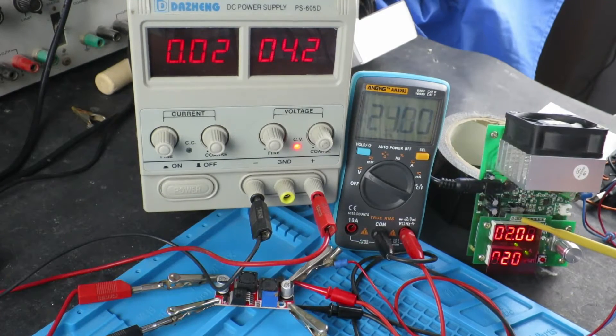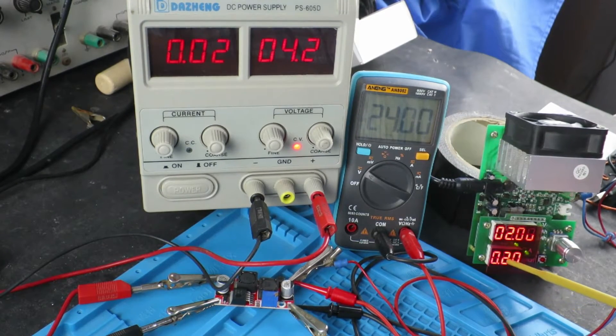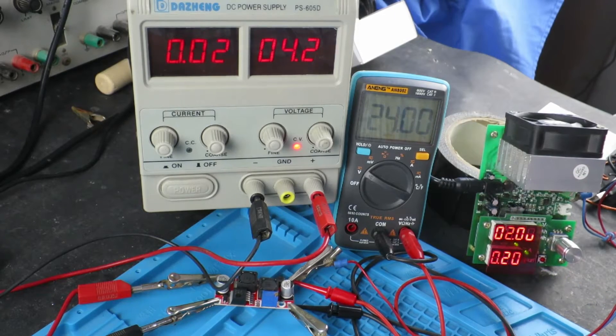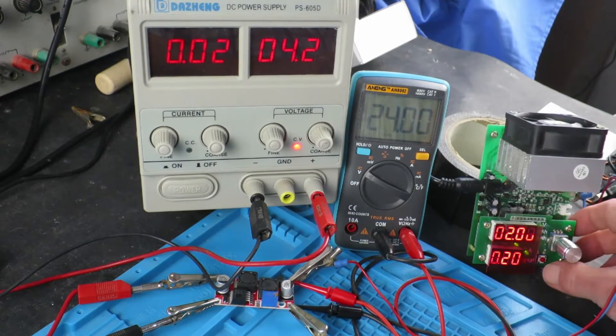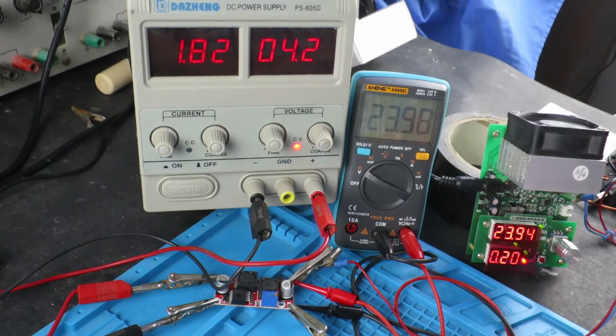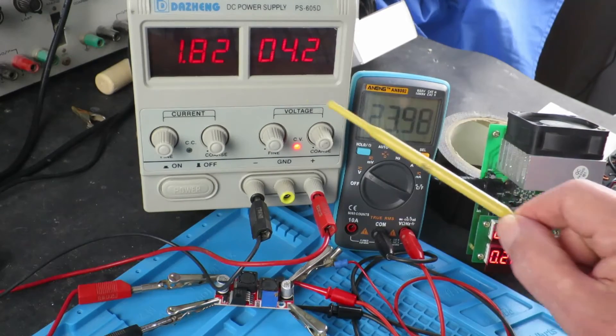So here I've connected up my electronic load and it's just set to 0.2 of an amp, 200 milliamps. So if we switch that on now you can see the voltage remains constant but we are drawing some 1.8 amps which may surprise some people.